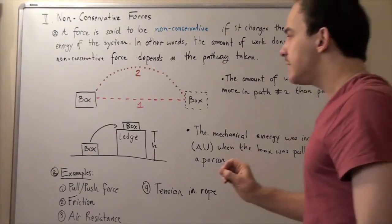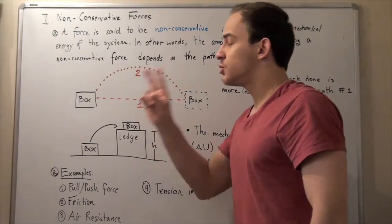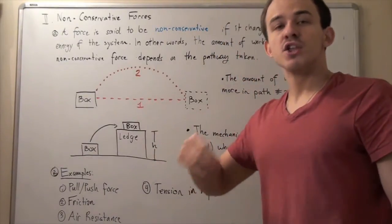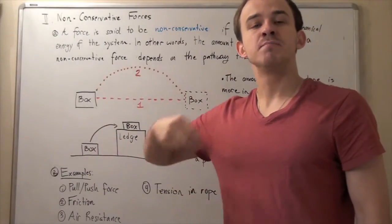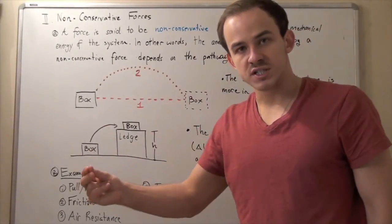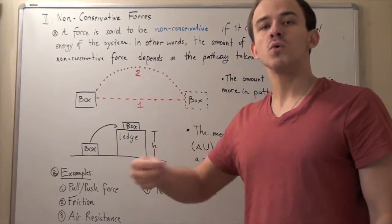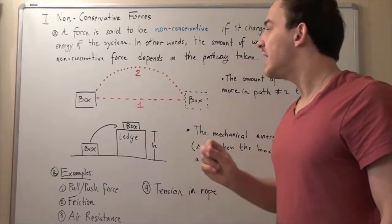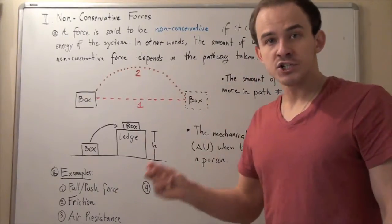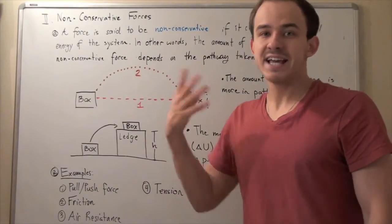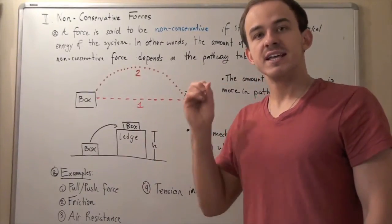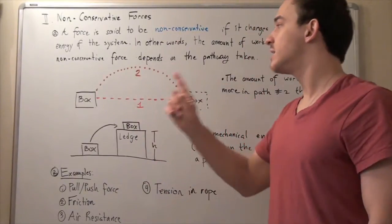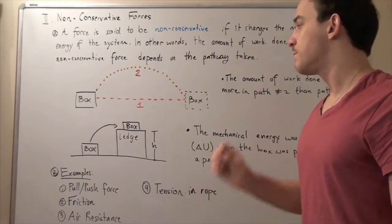The amount of work done is greater on path 2 than path 1. This means the pushing and pulling forces are both non-conservative forces. Likewise, kinetic friction is also non-conservative.